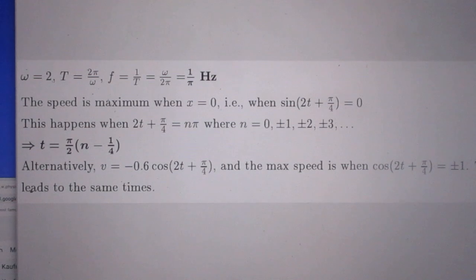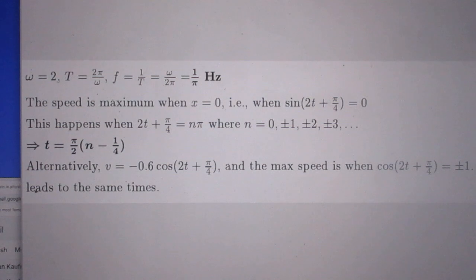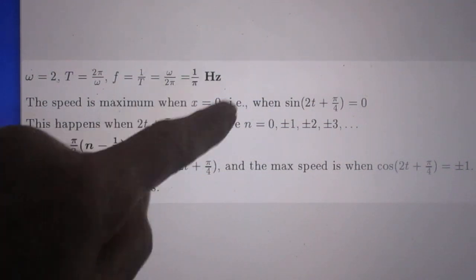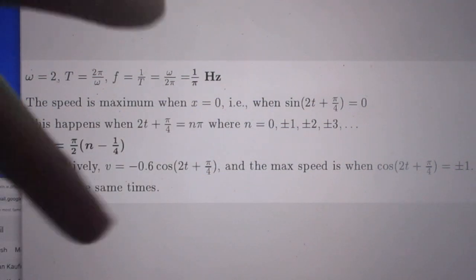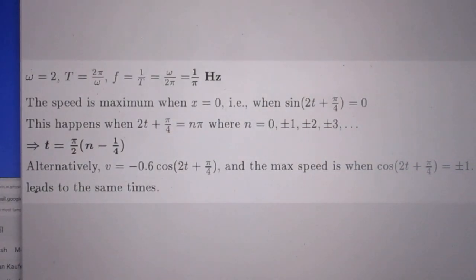The last question. The speed is maximum when x is 0 because then the object goes through its equilibrium point. In other words when the sine of (2t + π/4) is 0. This happens when 2t + π/4 is nπ, n being 0, 1, 2, 3, etc., plus or minus 1, plus or minus 2, plus or minus 3. So it happens at the time π/2 times (n - 1/4) seconds.